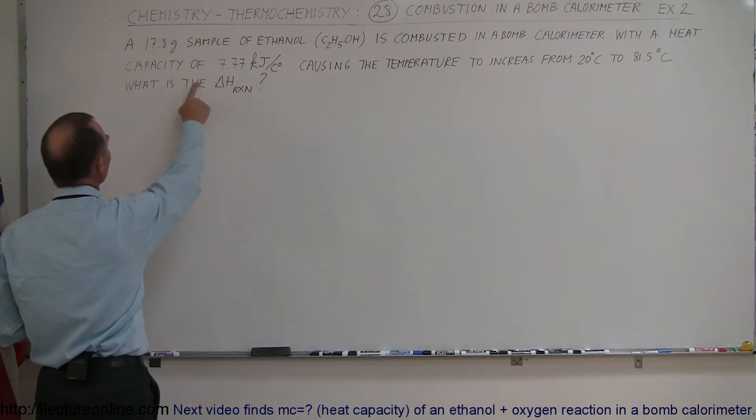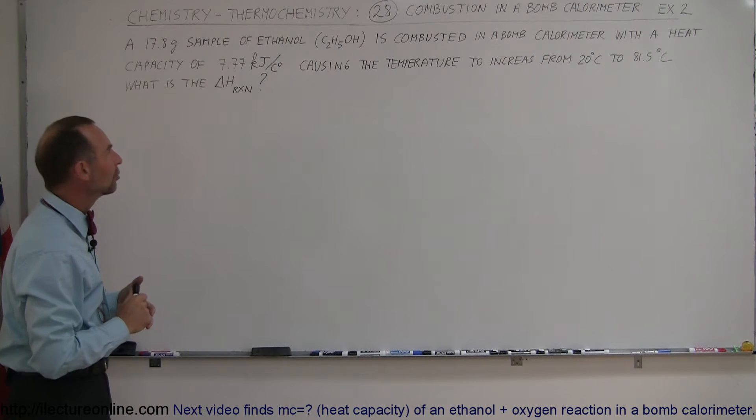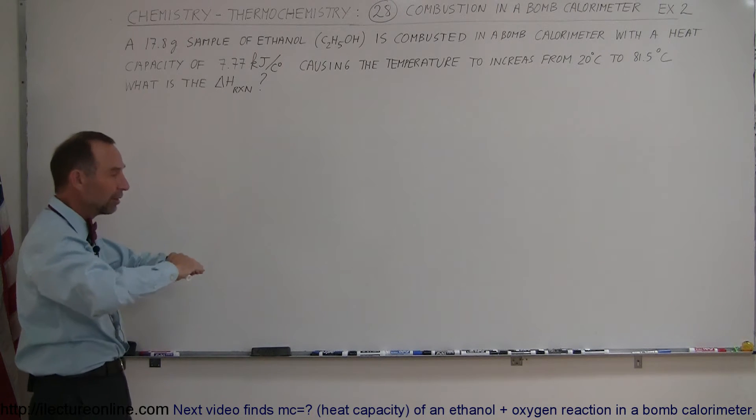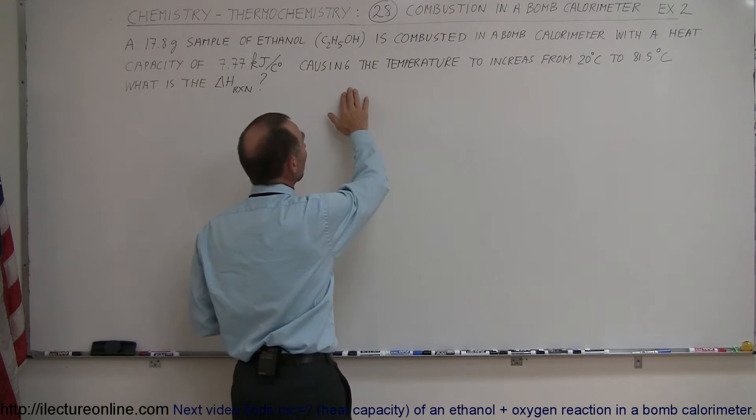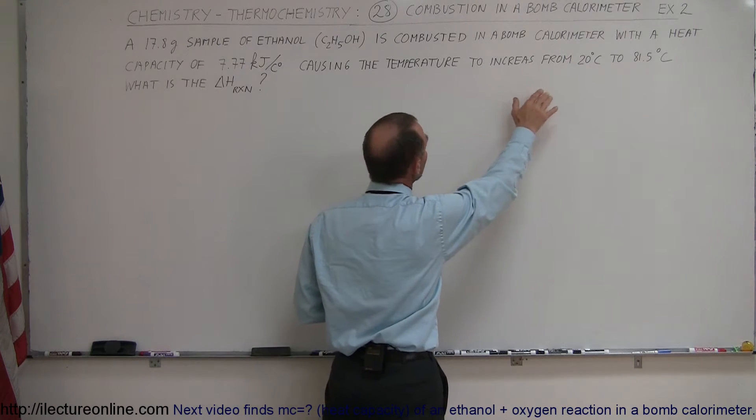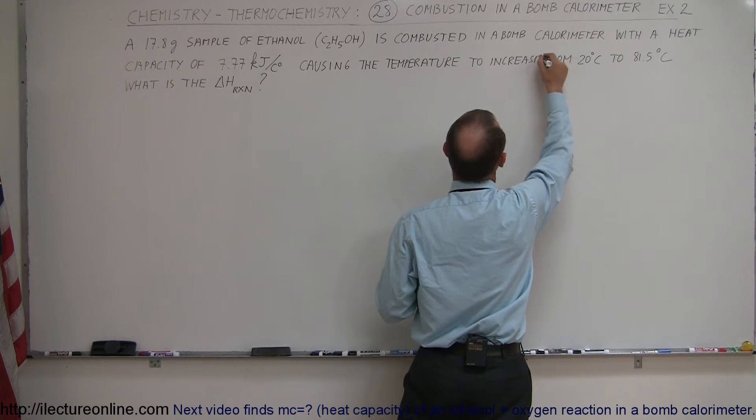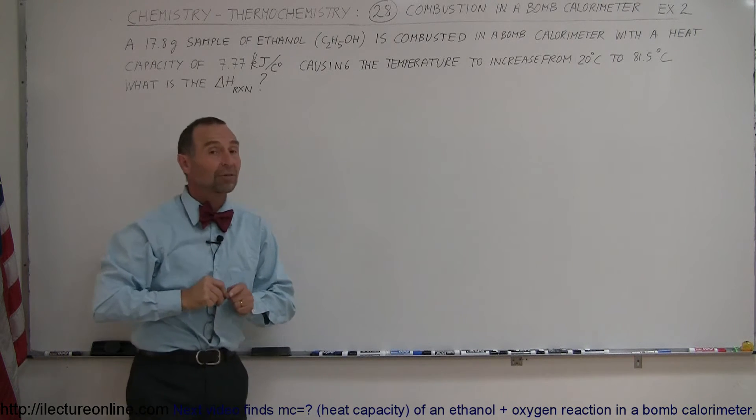The calorimeter has a heat capacity of 7.77 kilojoules per centigrade degree, which means for every 7.77 kilojoules of heat you add to the calorimeter, the temperature will go up by 1 degree centigrade. By doing this experiment, the temperature of the bomb calorimeter increases from 20 degrees centigrade to 81.5 degrees centigrade.